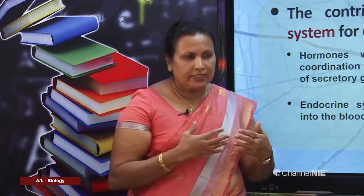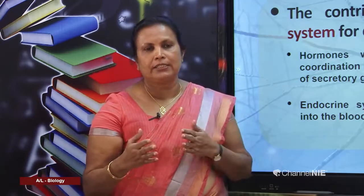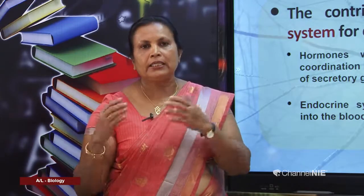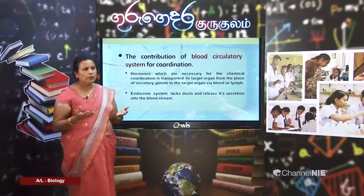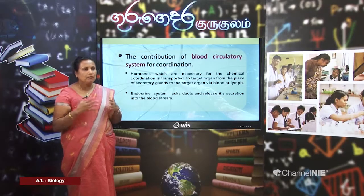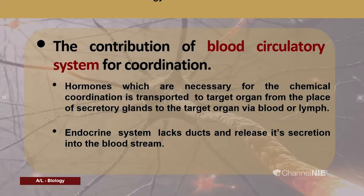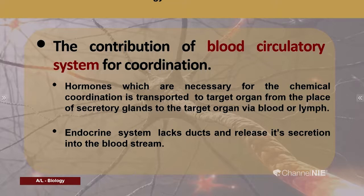The pathway of signals along the nervous system is completely different from the pathway in the endocrine system. The endocrine system uses the blood circulatory system for transportation of signals. Hormones, which are the chemical messengers necessary for chemical coordination, are transported to the target organ from secretory glands via blood or lymph. Endocrine glands lack ducts and release their secretions into the bloodstream.